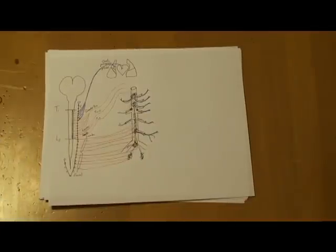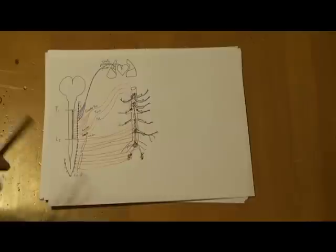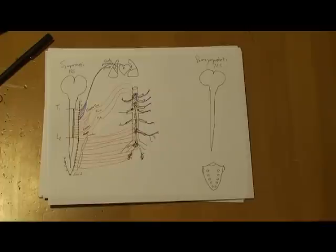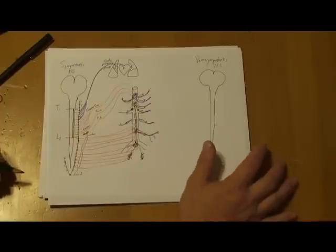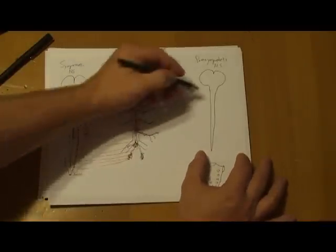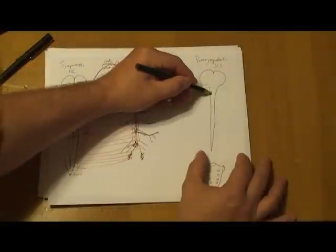Before we do that, let's discuss the parasympathetic innervation of the abdomen and thorax. To follow the branching patterns of the parasympathetic nervous system is quite a bit easier because the parasympathetics only come from two places.